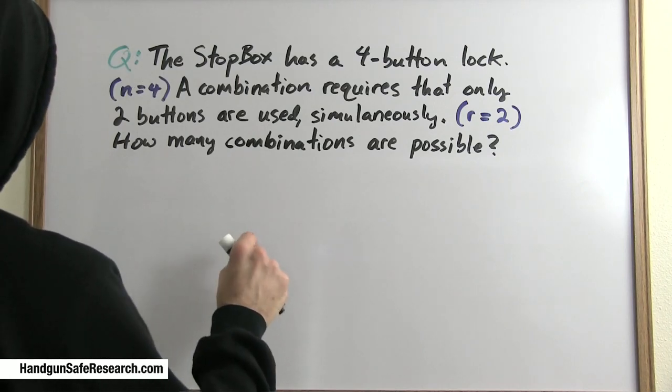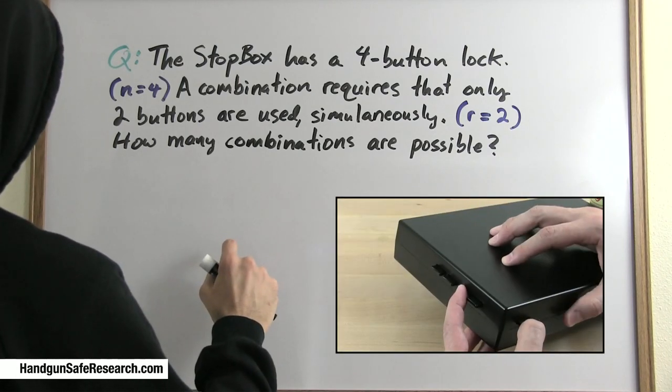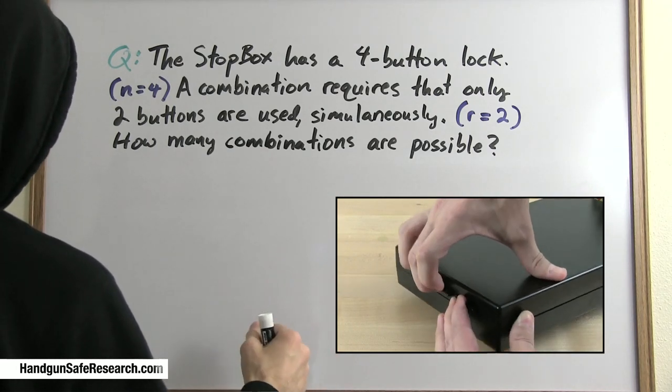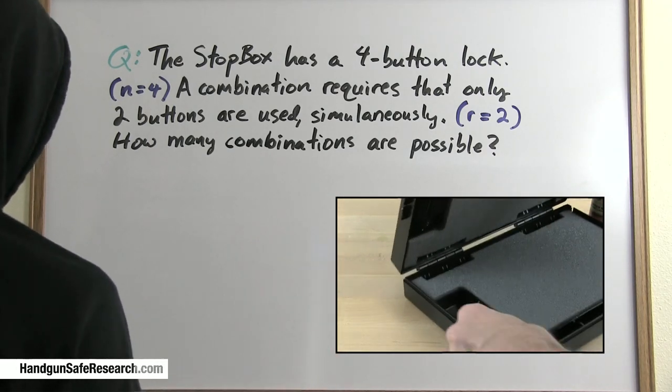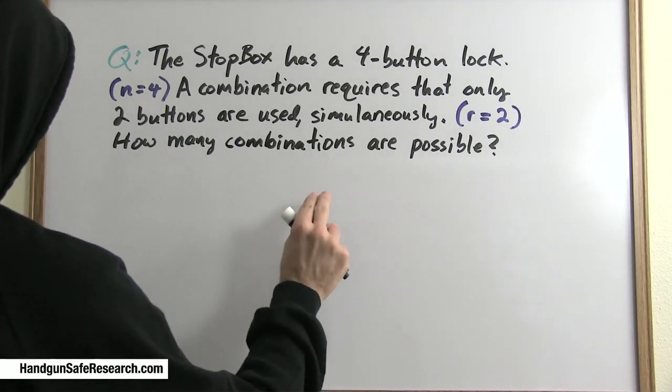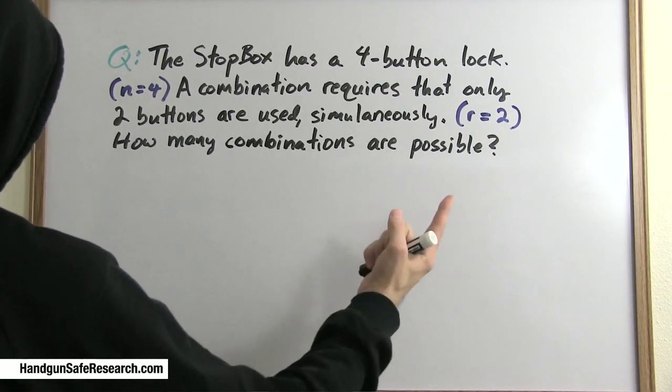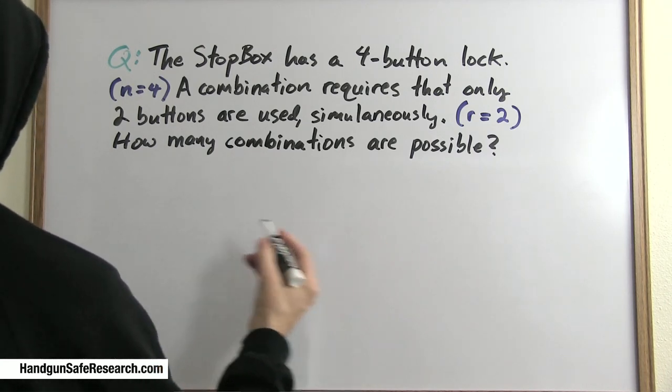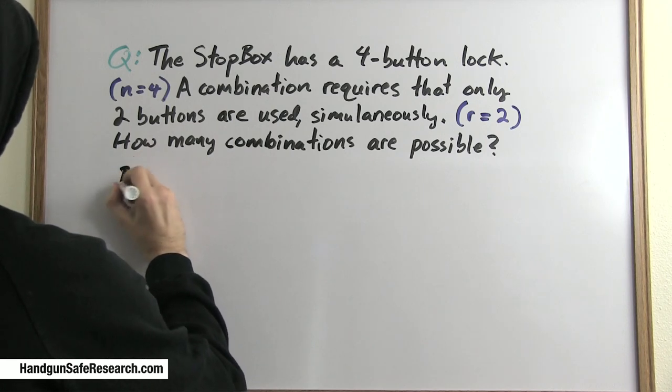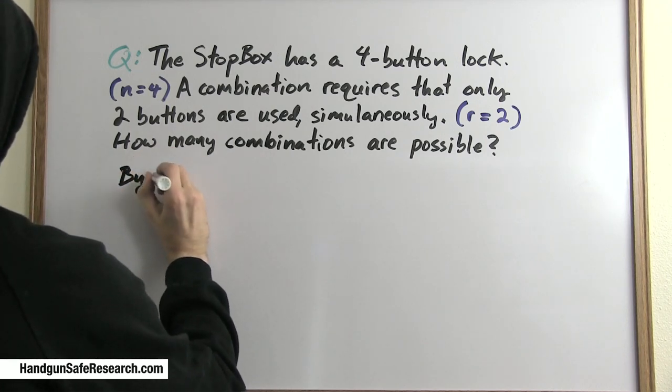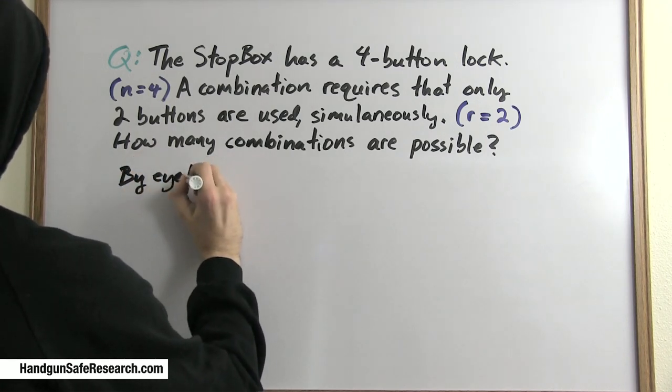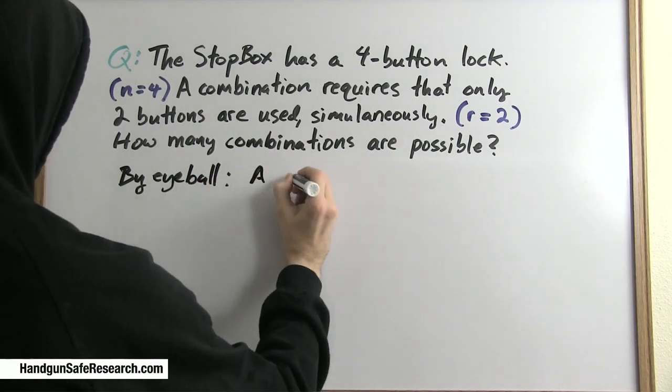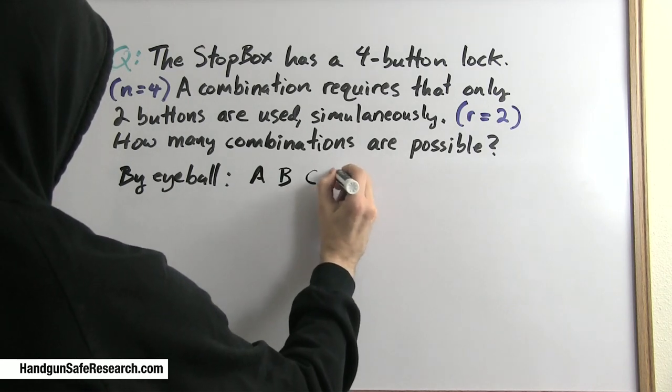So let's solve a combination problem. The Stop Box, a little plastic gadget that I looked at, has a four-button lock on it, n equals 4. A combination requires that only two buttons are used, pressed simultaneously, r equals 2. How many combinations are possible? I think the best thing to do is to start by just eyeballing it. I will label the buttons A, B, C, and D.